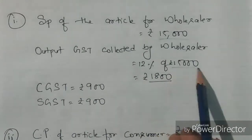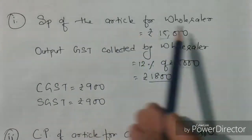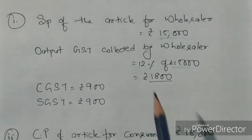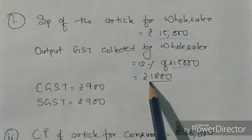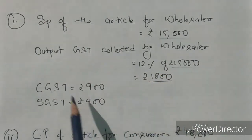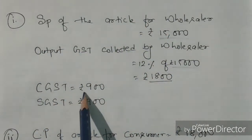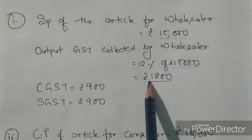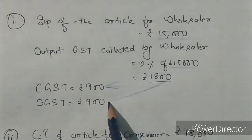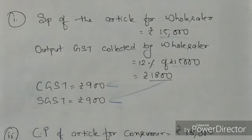The output GST collected by the wholesaler is 12% of 15,000. The wholesaler sold to the dealer at 15,000 and collected tax at 12%, which is 1,800. So the wholesaler pays this 1,800 as tax — half goes to the central government and half goes to the state government, since this is an intra-state transaction.